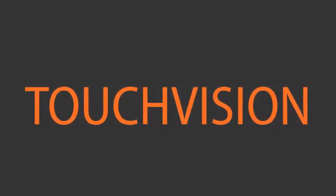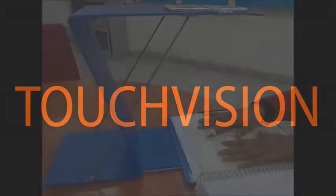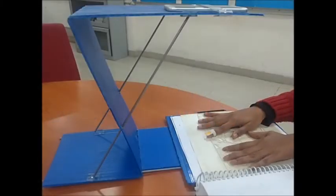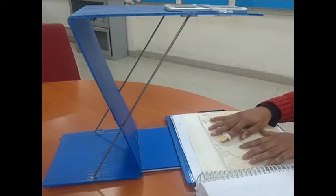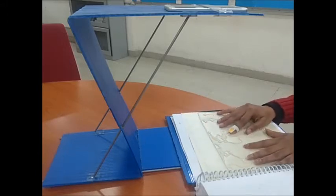Touch Vision aims to make pictures accessible for visually impaired kids. Mobile camera tracks finger movement over the tactile graphic and provides audio label and description.